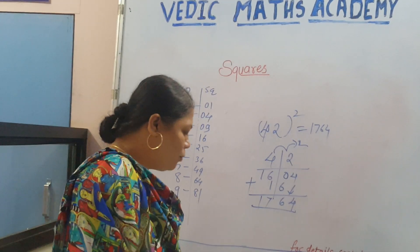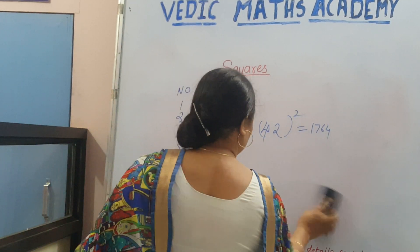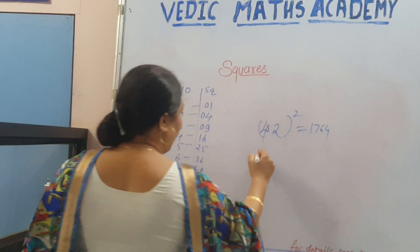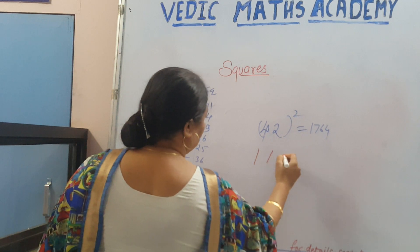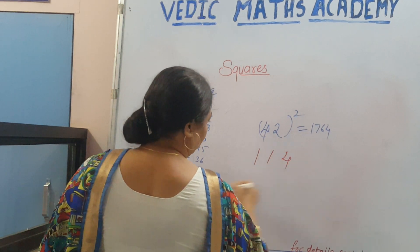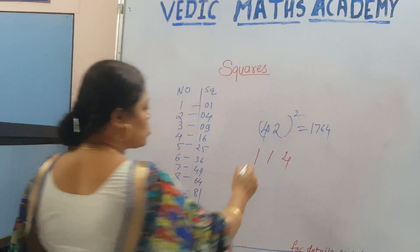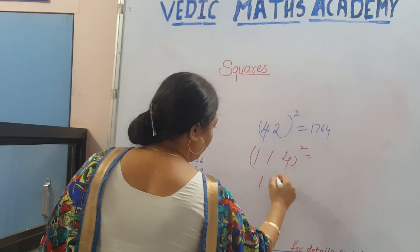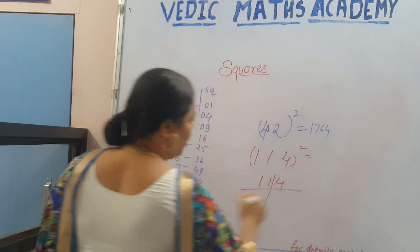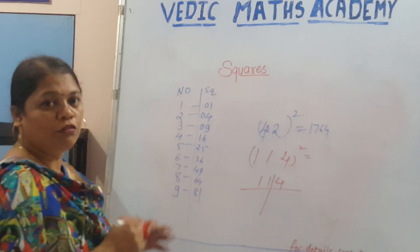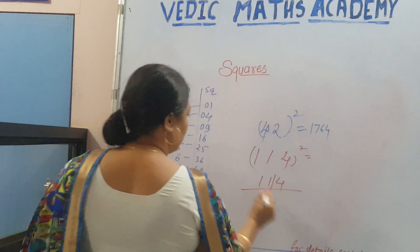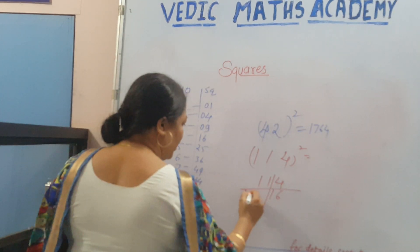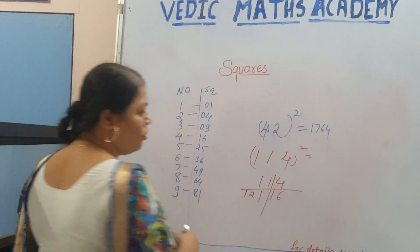Let us see one more example — the square of 114. For the number 114, how can we find it? We split it into two parts: 1, 1, and 4. Square of 4 is 16. What is the square of 11? It is 121.